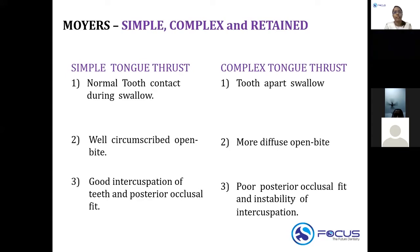The first type is simple tongue thrusting. Simple tongue thrusting means there is normal tooth contact during swallow. In complex tongue thrusting, you see a tooth-apart swallow because the tongue is coming in between. So you see a tooth-apart swallow in complex tongue thrusting.